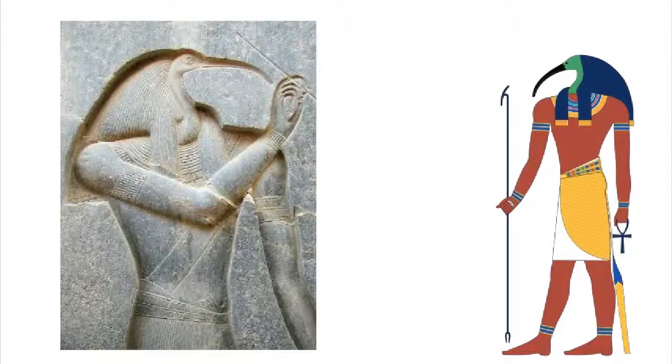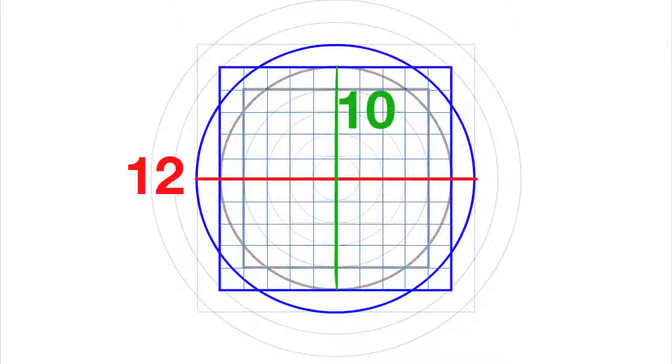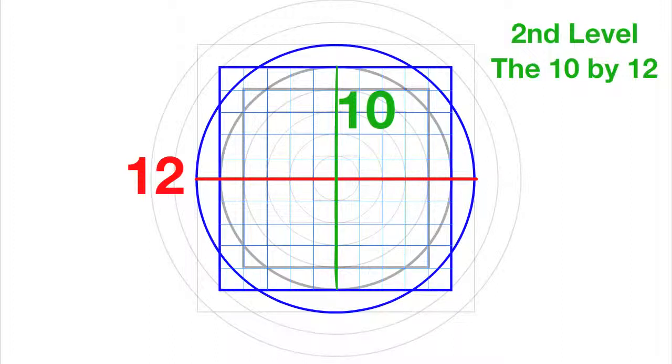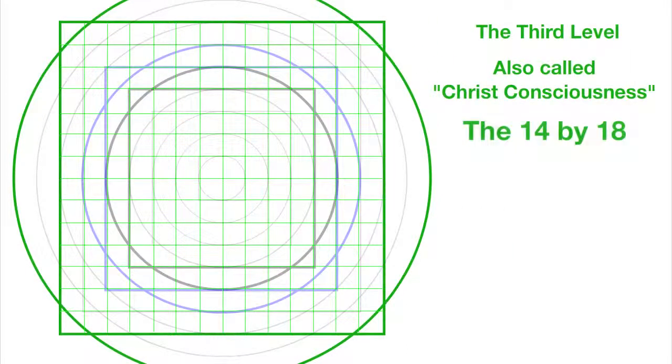According to Thoth, an ascended master who has provided much of this information with us, the first level is the first time self-aware consciousness began. The second level has 10 squares across the large square, and a 12 radii circle, so we'll call it a 10x12. This is where we are now. This level is the third level, which is also called Christ Consciousness. It is a 14x18.